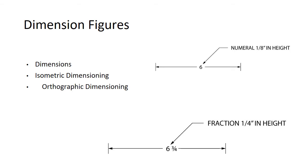Dimensioning figures. When we dimension figures, this is what it's going to look like. You're going to have the numeral in the middle of the arrows. And then on the bottom you see that we could have a fraction that's, you know, a quarter of an inch in height. The numeral should be an eighth of an inch in height, but it just depends on what we've got going on in the size of the drawing.